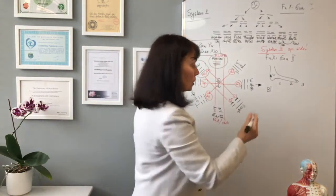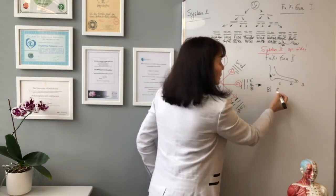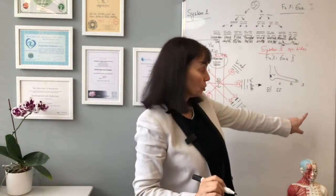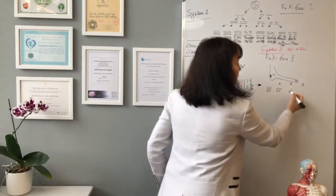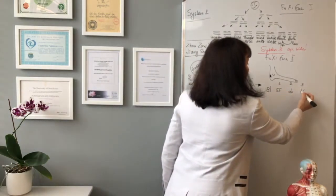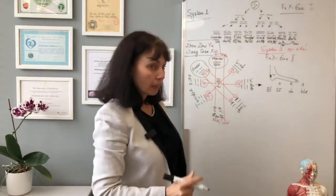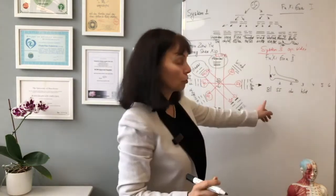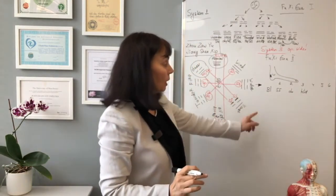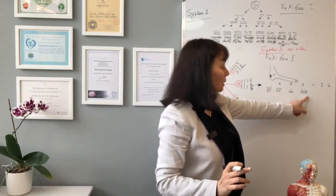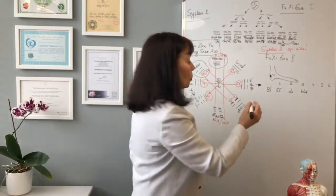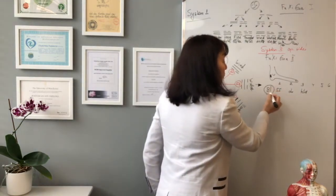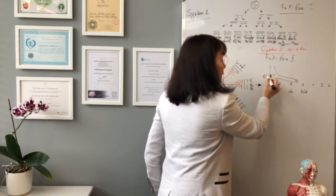According to system one, who balances the bladder? Small intestine. According to system two? Lung. According to system three? Kidney. We'll learn systems four, five, and six later. Now we have to judge which meridian goes through the tendon, because here the bladder is the Achilles tendon.